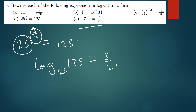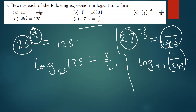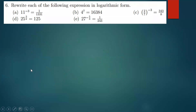We move on to the next one: 27 to the power negative 5 over 3 equals 1 over 243. We can write this in logarithmic form — the base remains 27, so log of 1 over 243, base 27, equals negative 5 over 3. I'm also verifying that 25 to the 3 over 2 does indeed give 125. Do you have any questions about converting expressions to logarithmic form?